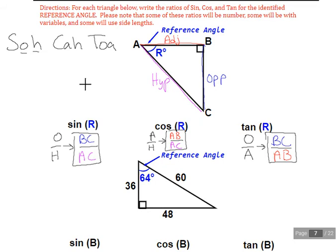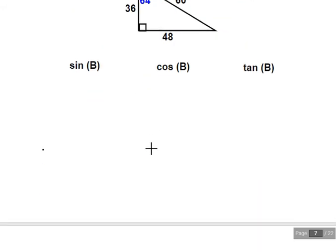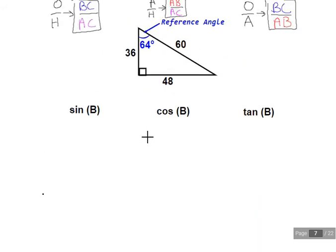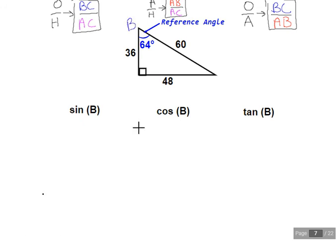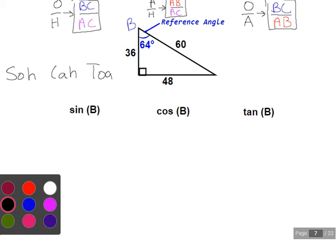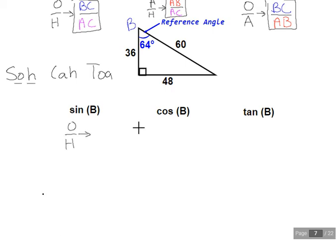Last set. So we have the reference angle given to be 64, which implies that this is going to be point B. So again, we have SOHCAHTOA, sine, cosine, and tangent. So sine O over H. Oh, we didn't label. My fault. So this is going to be opposite, hypotenuse, and adjacent.